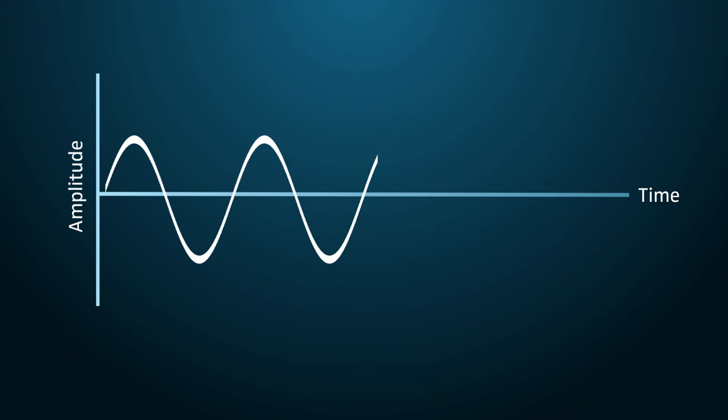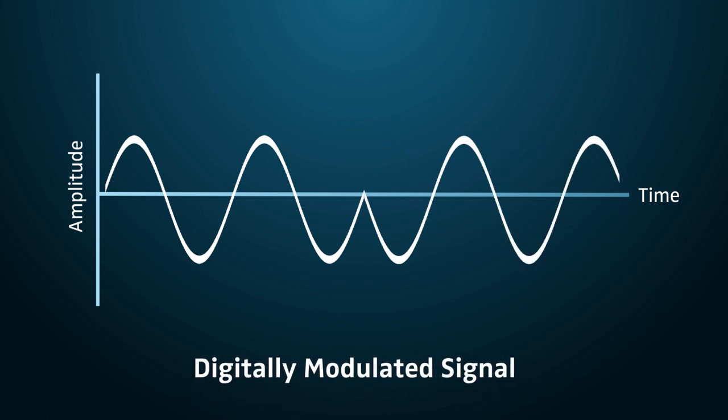Through digital modulation, the modulating signal alters certain characteristics of the carrier signal to superimpose its data. After transmission, the receiving system demodulates the carrier to recover the information.